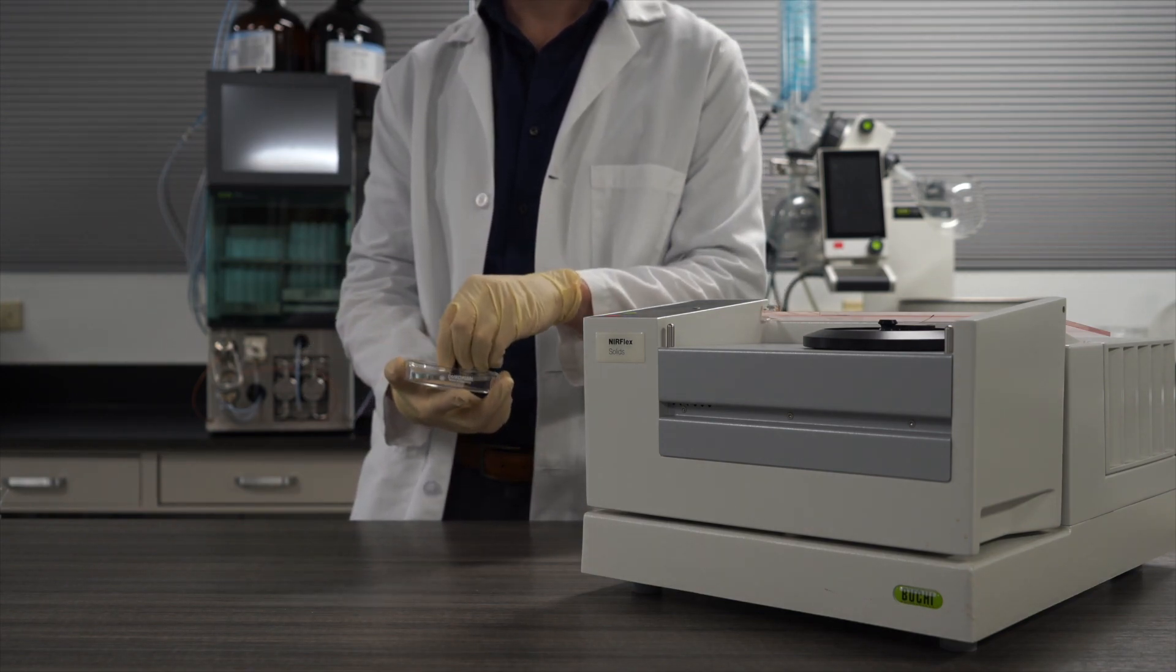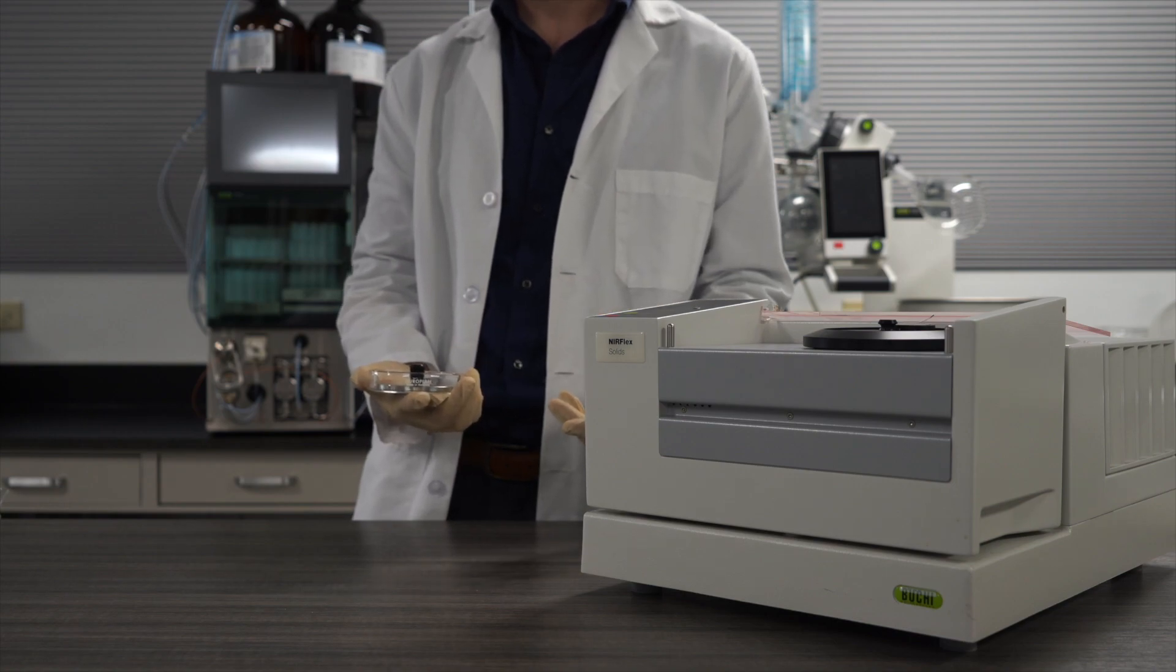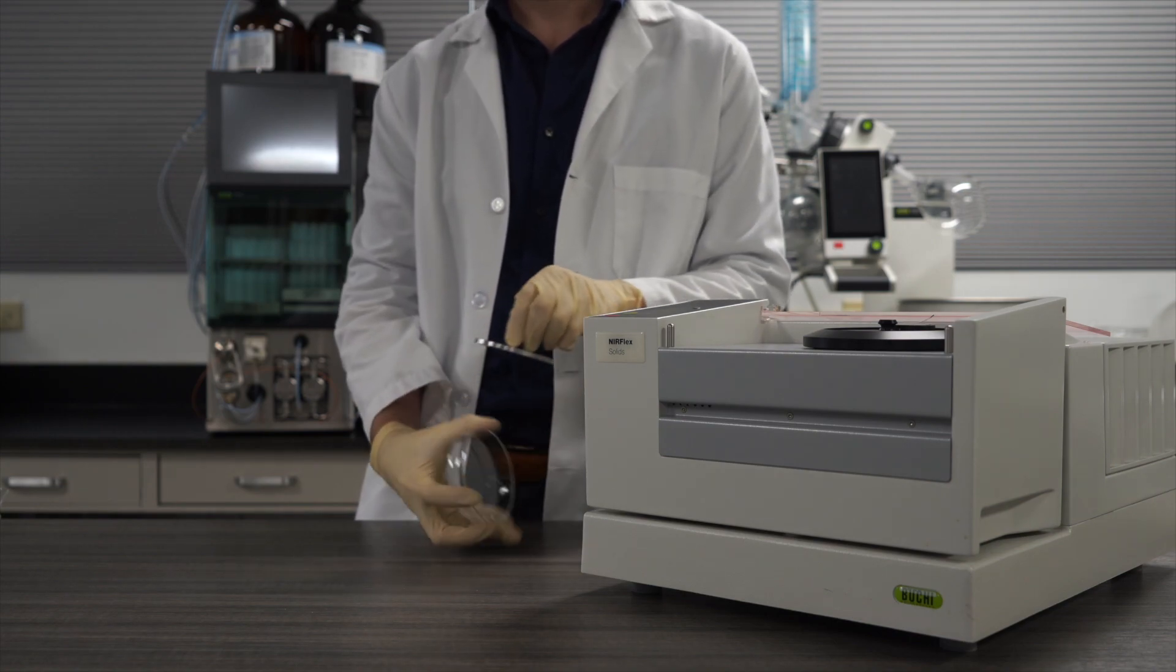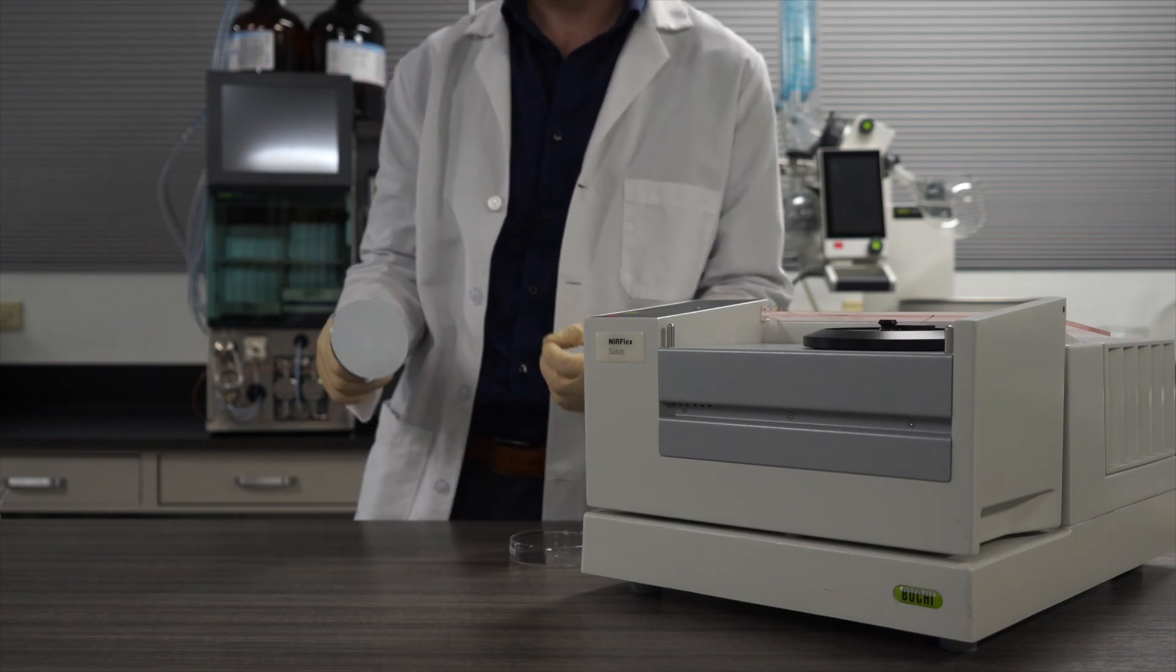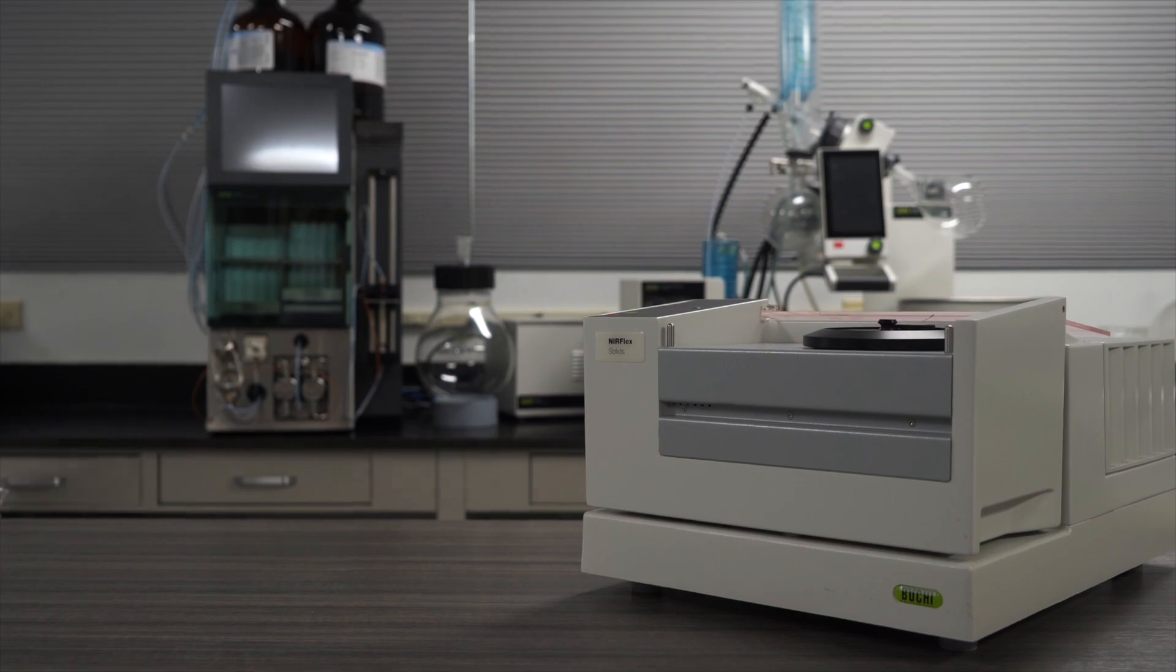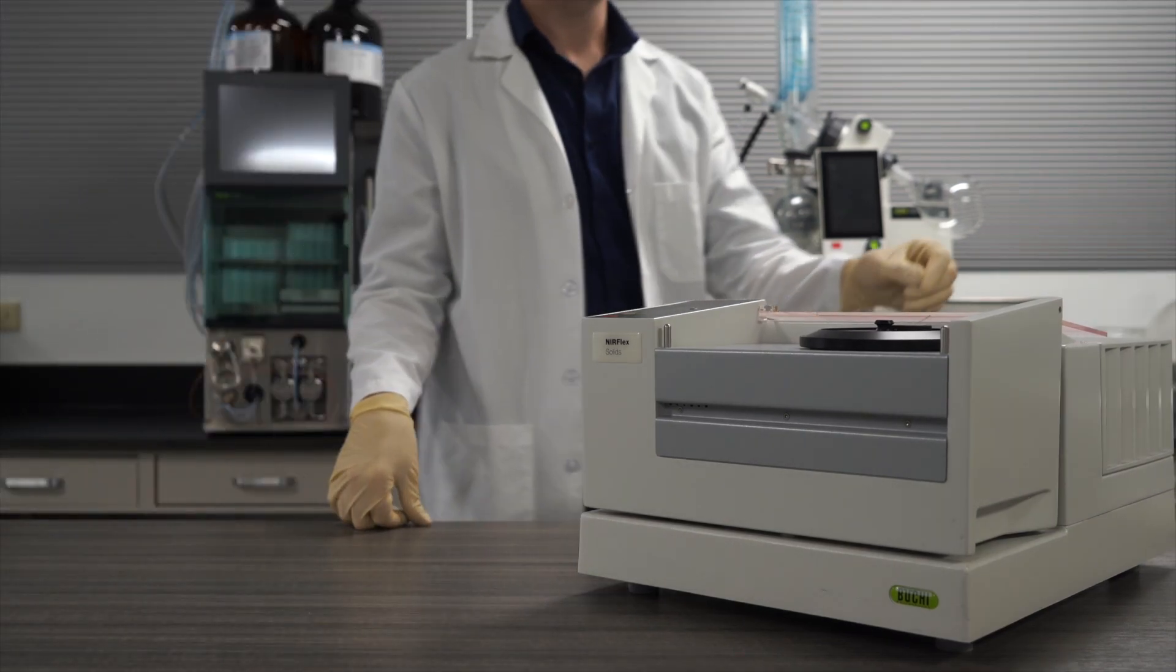All you have to do is add this handy little transflectance cover to a sample cup containing anything from a clear liquid to a semi-solid. The cover has a reflective metal surface and little legs. These features provide a fixed path length, enabling a simple transflectance measurement.